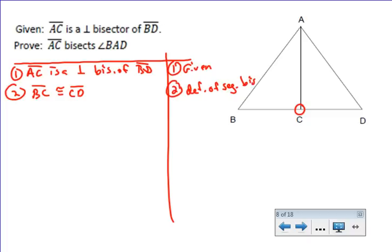Anytime you're given anything about a bisector, you should know that means there are two parts that are congruent. Segment bisector gives you two congruent segments. Angle bisector gives you two congruent angles.